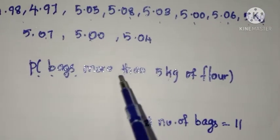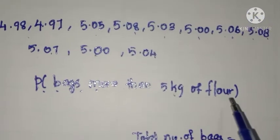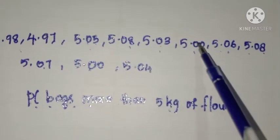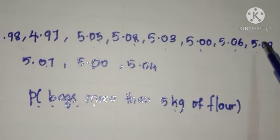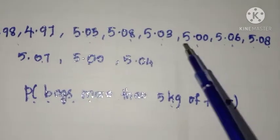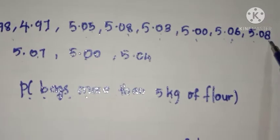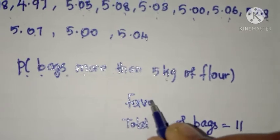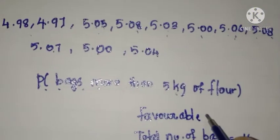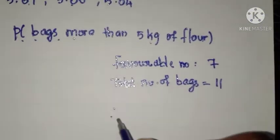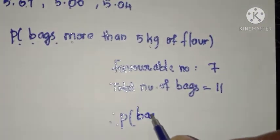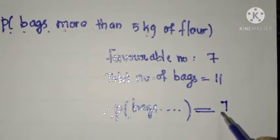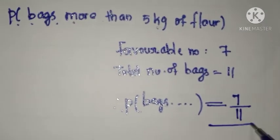Now we need to count bags containing more than 5 kg of flour. Counting more than 5: 1, 2, 3, 4, 5, 6, 7. So the favorable number is equal to 7. The probability of a bag containing more than 5 kg of flour is equal to favorable cases divided by total cases, which is 7 by 11.